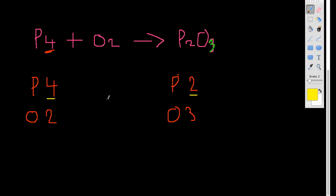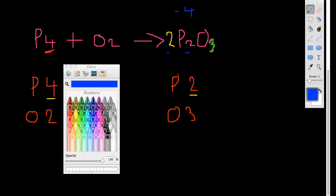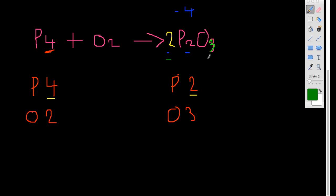How do you get from 2P to 4P? You times it by 2, so put a 2 on the outside. Then 2 times 2 is 4P. And then you do 2 times 3O, which is 6O. So that means now we have 4P and 6 oxygens on the right side.